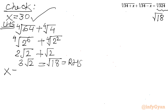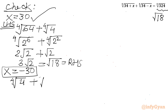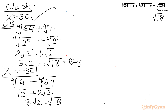For x equals minus 30: the 4th root of (34 minus 30) gives the 4th root of 4, and the 4th root of (34 plus 30) gives the 4th root of 64. This gives root 2 plus 2 root 2 equals 3 root 2, which equals root 18, our RHS. So x equals minus 30 is also verified and is a valid solution.